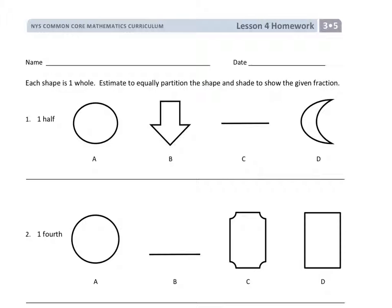And we'll start by reading the directions. Each shape is one whole. So this is one whole, this is one whole, this is one whole, and this is one whole. Estimate, which means we're not going to make them perfect, but we're going to get as close as we can to equal parts. To equally partition. Remember partition means divide. The shape and shade to show the given fraction.